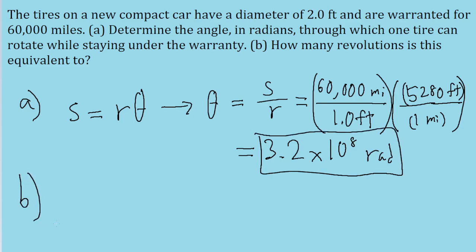Part B of the problem asks how many revolutions this is equivalent to. So all we got to do is take the answer we got for theta in part A, and then convert that into revolutions.